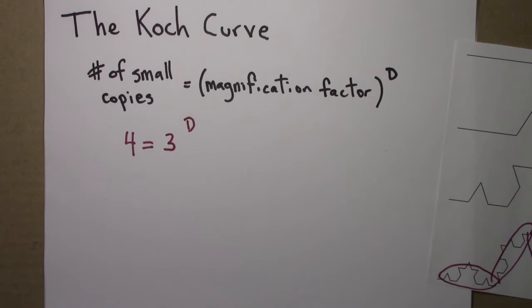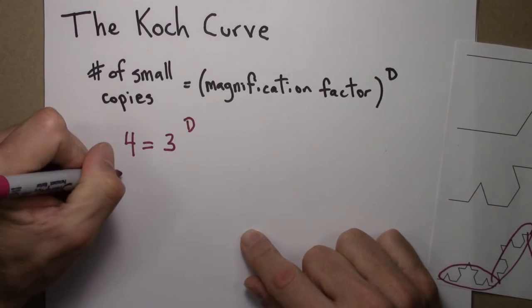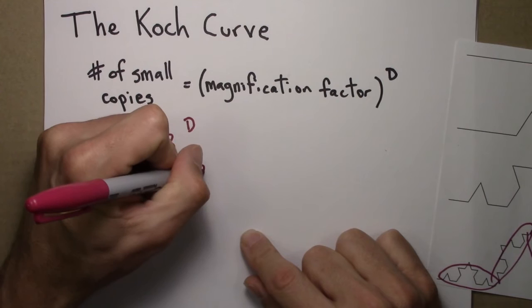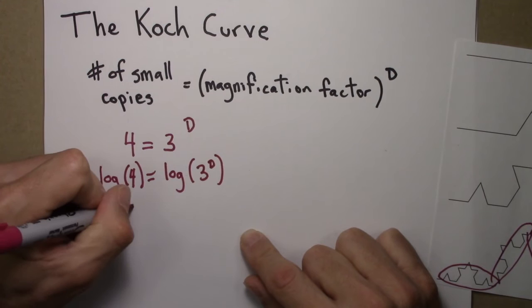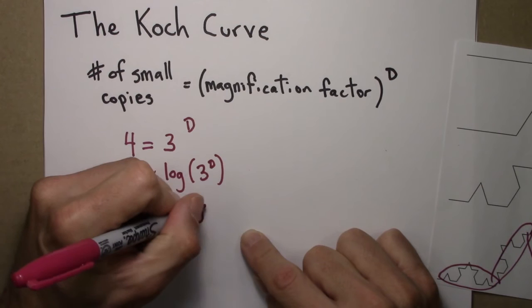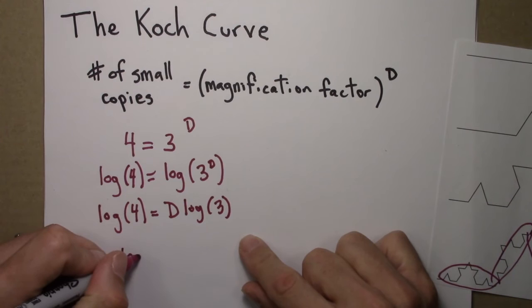It's raised to the D power. So now we use logarithms to solve for D. Take the log of both sides. Use the exponent property of logs to bring D downstairs outside. Divide through by log three, and we get...